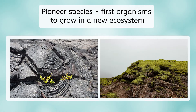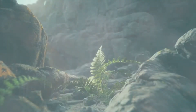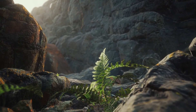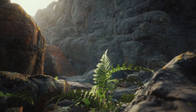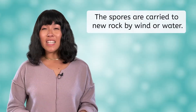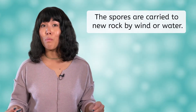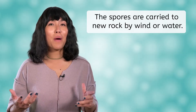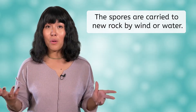The first organisms to grow in a new ecosystem are called pioneer species. These organisms don't need much soil and can withstand the harsh conditions that will likely be found here. The growing conditions might seem impossible, but as usual, life finds a way. How do you think the pioneer species got there? They definitely weren't growing there before. Their seeds, or in most cases spores, were likely carried to the new rock by wind, water, or birds flying overhead.